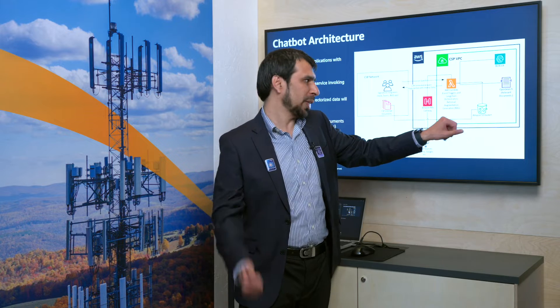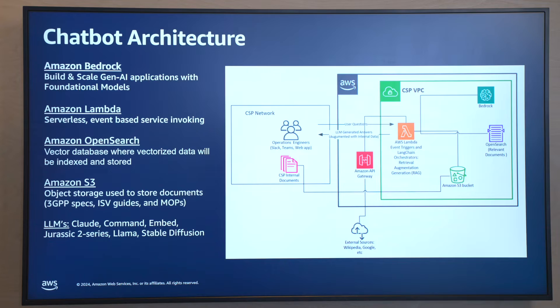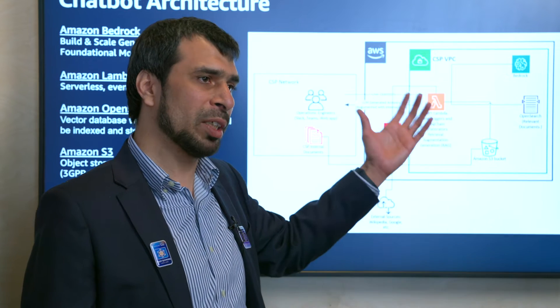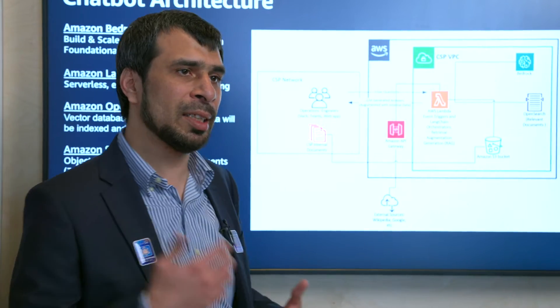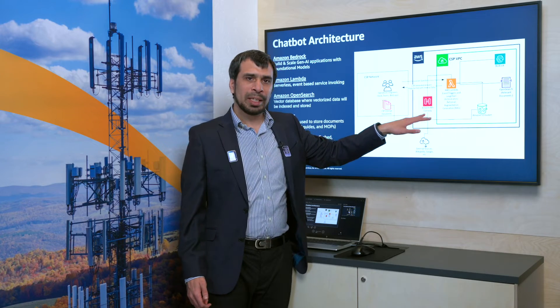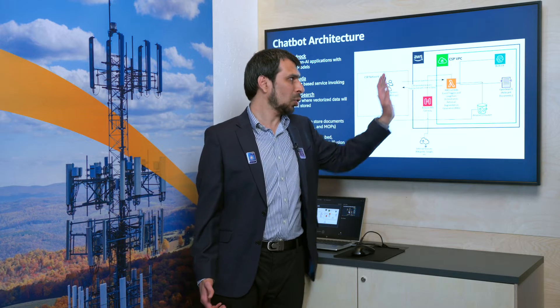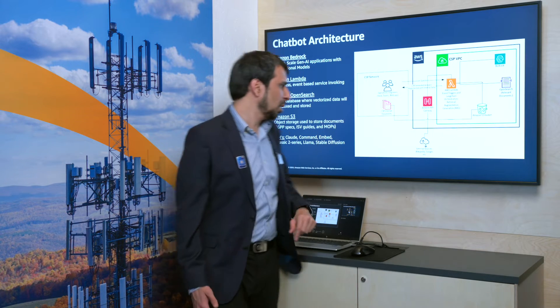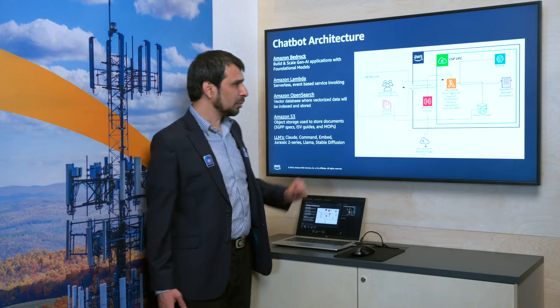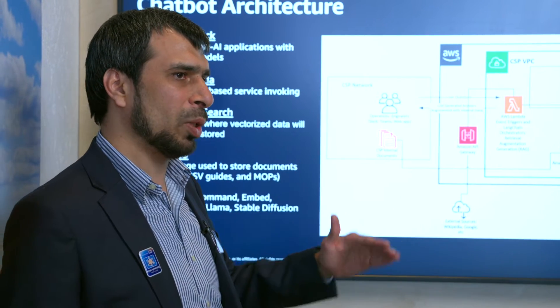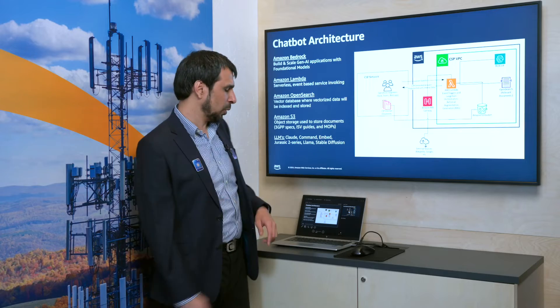We are using Amazon S3, which is object storage where operators can upload all the documents. We are using Lambda, which is an event-based trigger — whenever a user is asking questions, it will only be triggered at that time, saving cost. You are not going to use EC2 instances all the time. We are using Amazon API Gateway in this architecture, but you really don't need to use it if you don't have documents that need to be accessed through the internet. All this environment will be completely private in this particular solution.